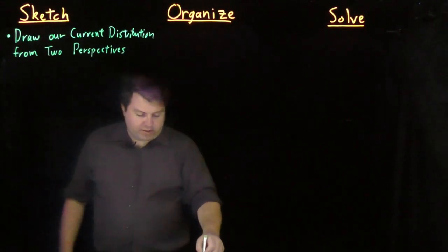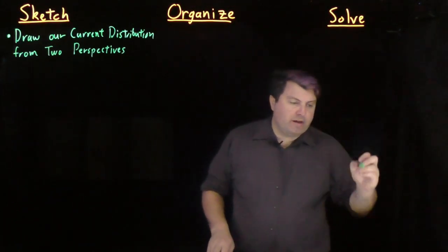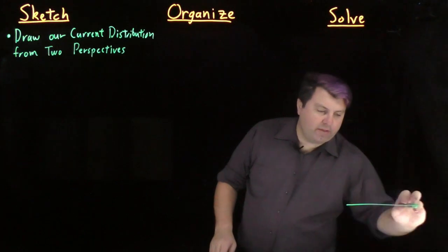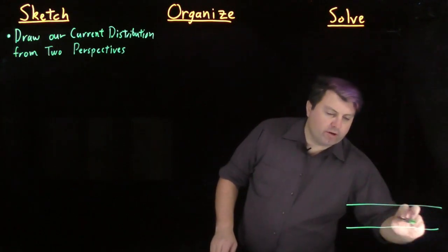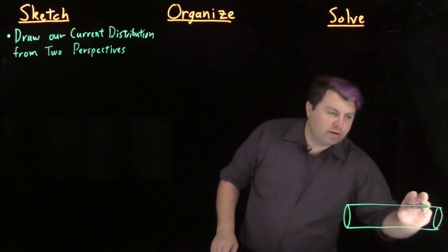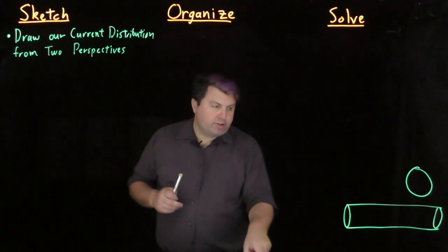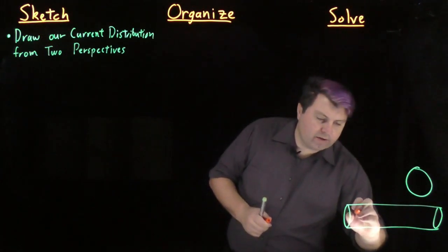We have to make sure that we're living in the third dimension. So if the case is that we're looking at a thick wire, we might want to draw our wire from this perspective and our wire from this perspective and show some amount of current going through it.